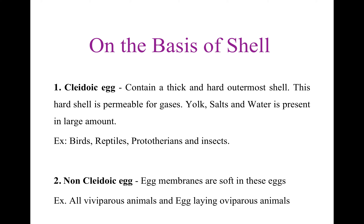Now, we will divide eggs on the basis of shell into Cleidoic Eggs and Non-Cleidoic Eggs. Cleidoic Eggs contain a thick and hard outermost shell. This hard shell is permeable for gases, and in them, yolk, salt, and water are present in a large amount. Examples are eggs of birds, reptiles, prototherians, and insects. Now, Non-Cleidoic Eggs — their egg membranes are very soft. This type of eggs are found in all viviparous animals and egg-laying viviparous animals.